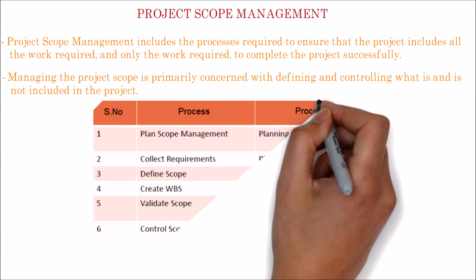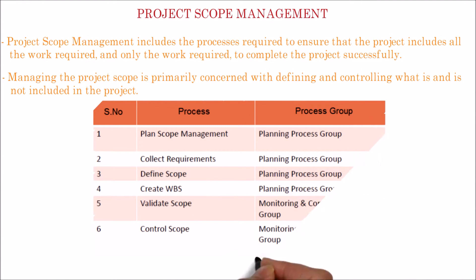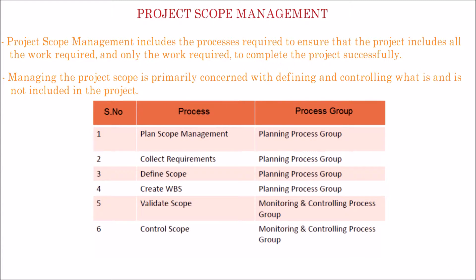There are six processes in this knowledge area. First is Plan Scope Management, the process of creating a scope management plan that documents how the project scope will be defined, validated, and controlled.